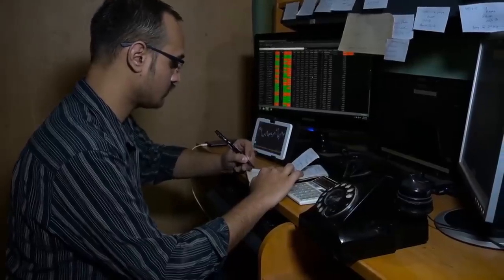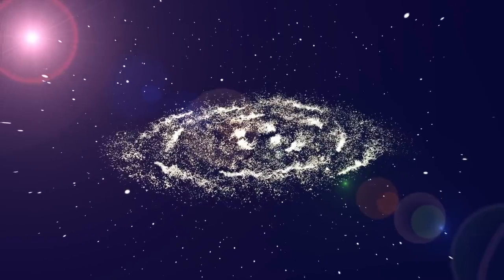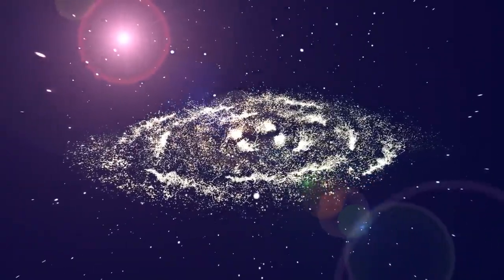One of Webb's central missions is to detect the first luminous entities, galaxies and stars that came into existence within the universe's first few hundred million years. These ancient structures are vital to understanding how the cosmos was born.